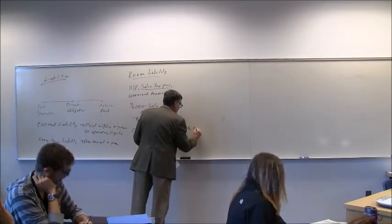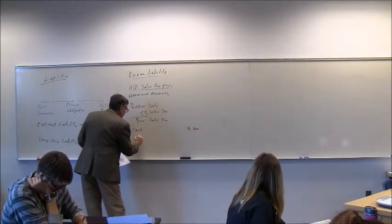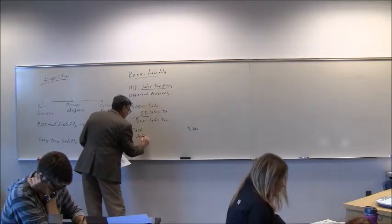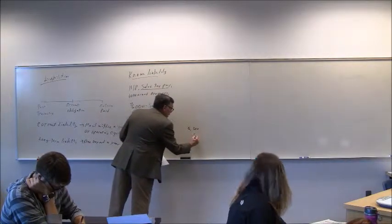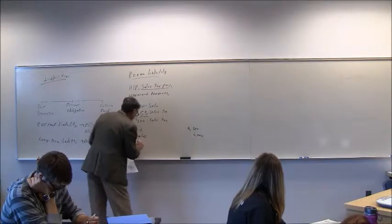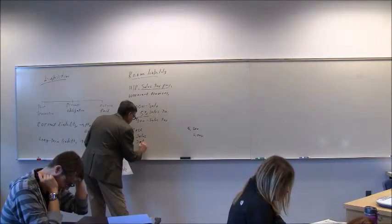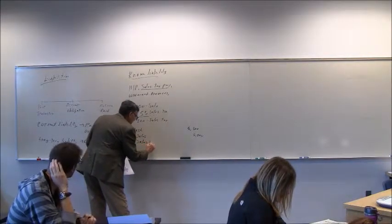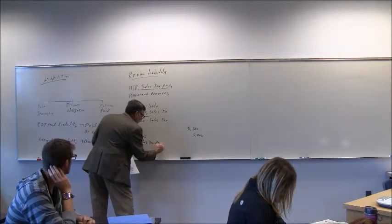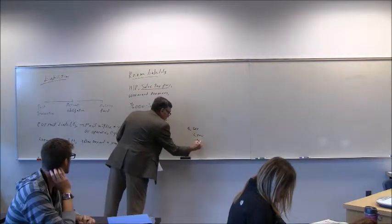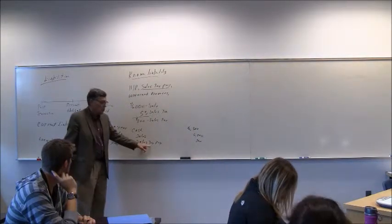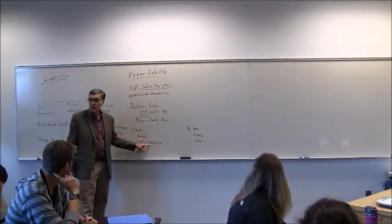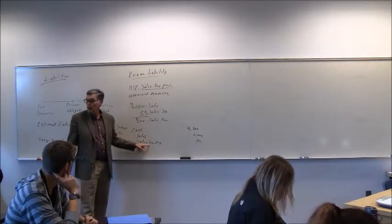In this case, here's what the journal entry will look like. Cash will be debited for $6,300. And where do we get the $6,300? Well there's a $6,000 sale, there was a $300 sales tax, so your customer owed you $6,300. Sales is credited for $6,000 and you have a sales tax payable of $300.